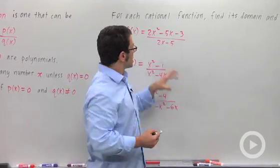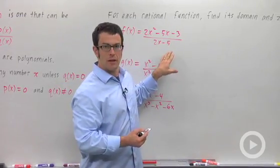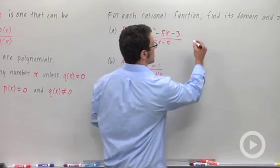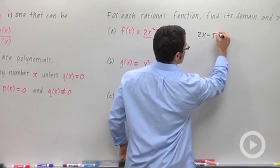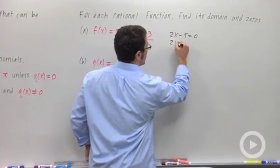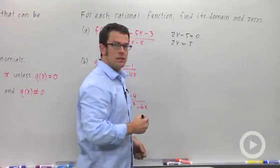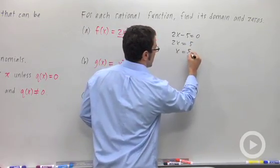The domain of this function is going to be all real numbers except where the denominator is 0. So where is the denominator 0? 2x minus 5 equals 0 when 2x equals 5. So we divide by 2, x equals 5 halves.